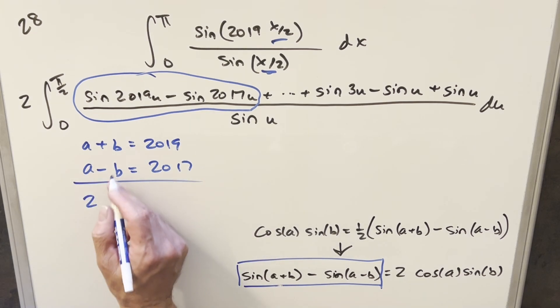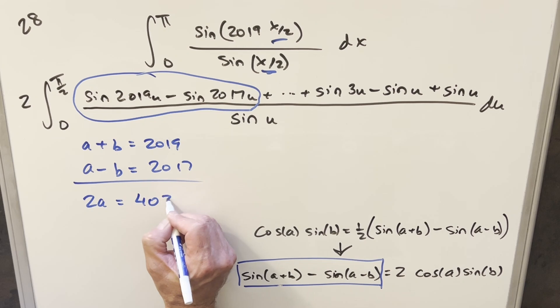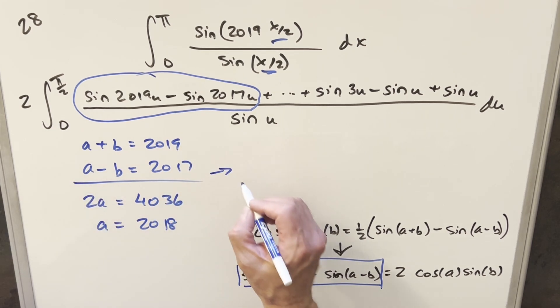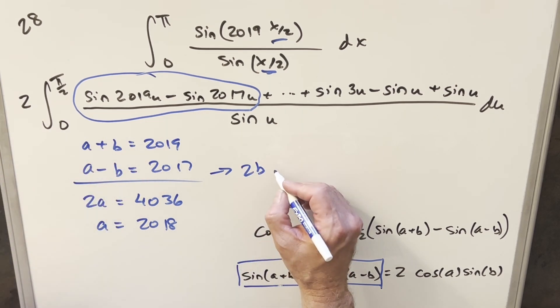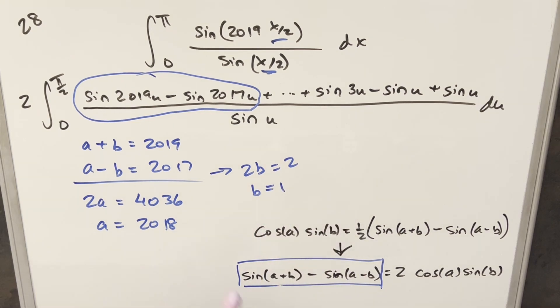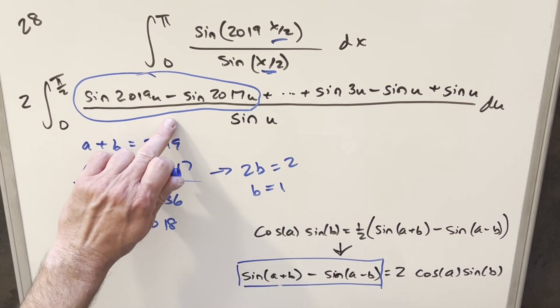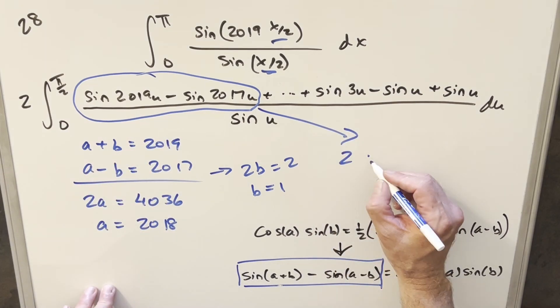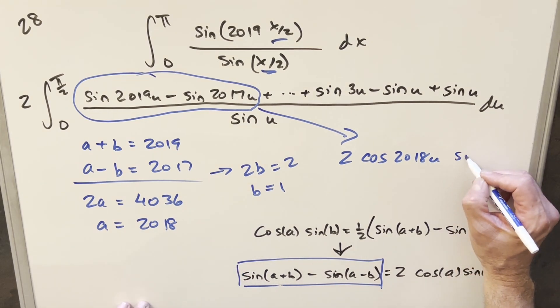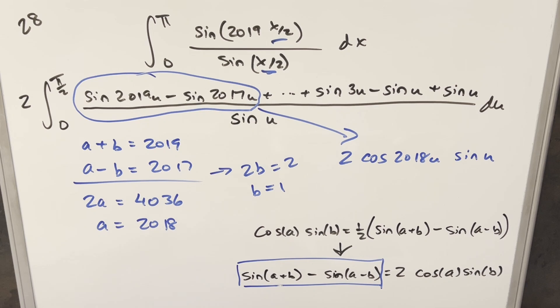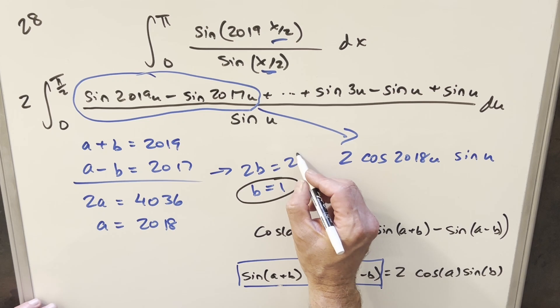Now, if we add these two together, the b's cancel. We have 2a, and this is going to become 4036, or a is going to be just equal to 2018, which is right between 2017 and 2019. And if we subtract these two equations, the a's cancel out. We're going to get 2b. Subtracting 2017 from 2019, we have 2, so b is going to be equal to 1. So for this case, using the formula here, this is going to transform. It's going to become 2 cosine 2018 u and then sine of b, that's just sine of u. And the reason this is going to help us is because this b is going to be equal to 1 in every case, because in each case, we've set it up where the angles differ by 2.